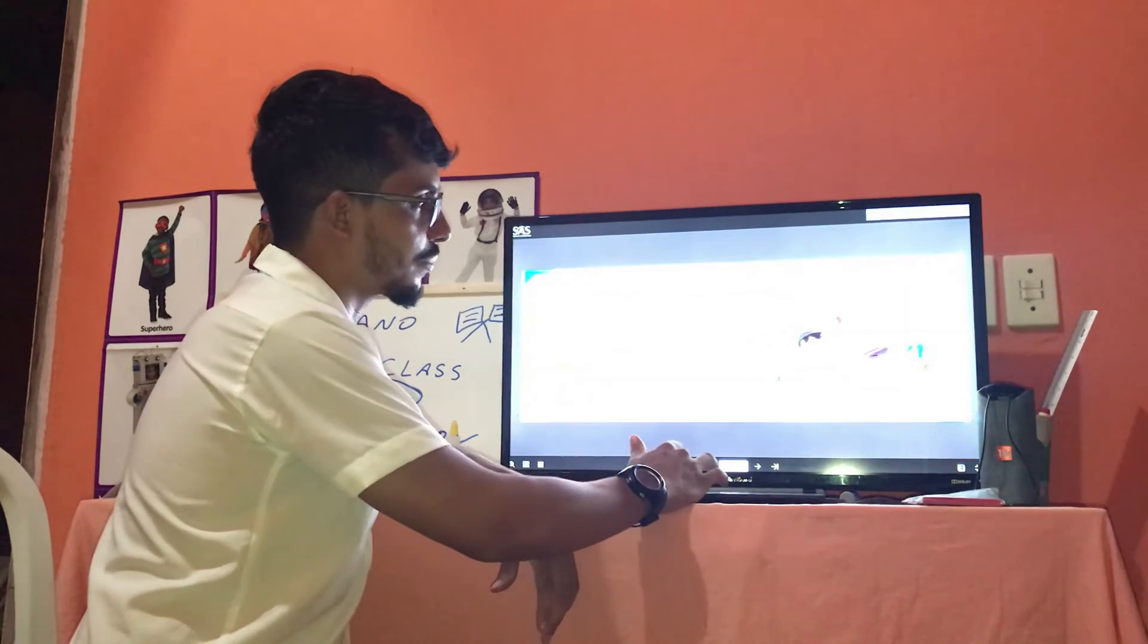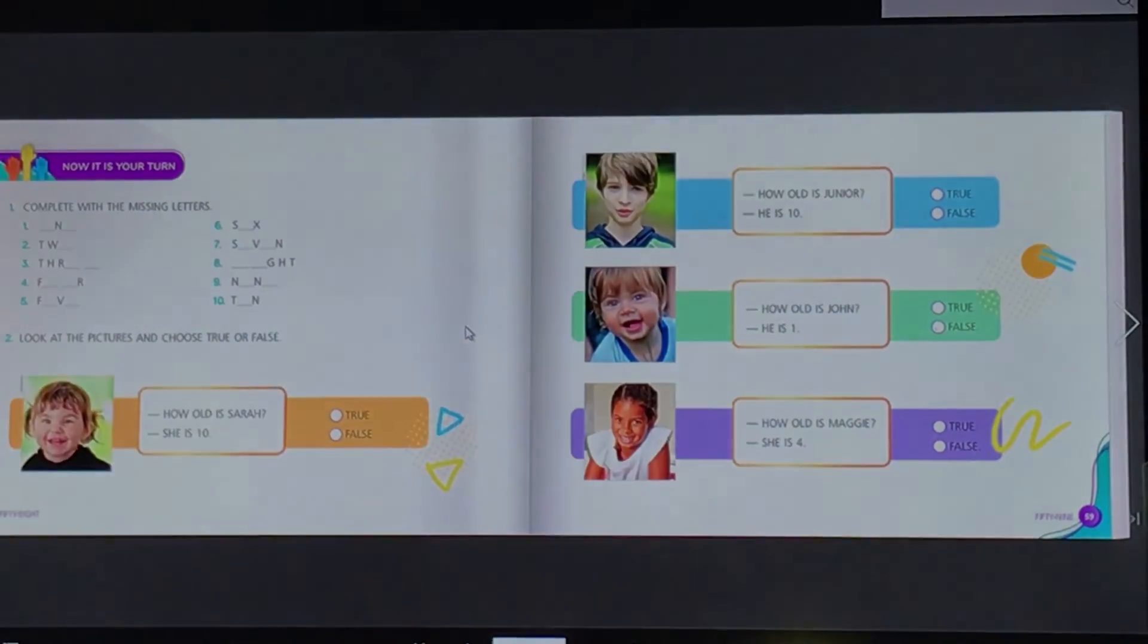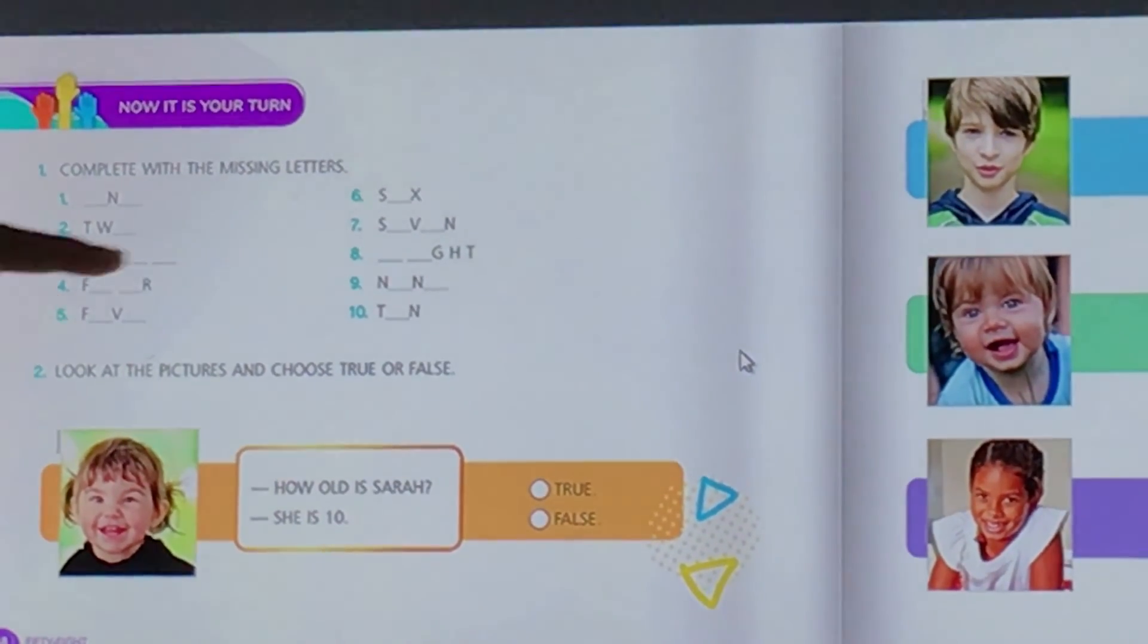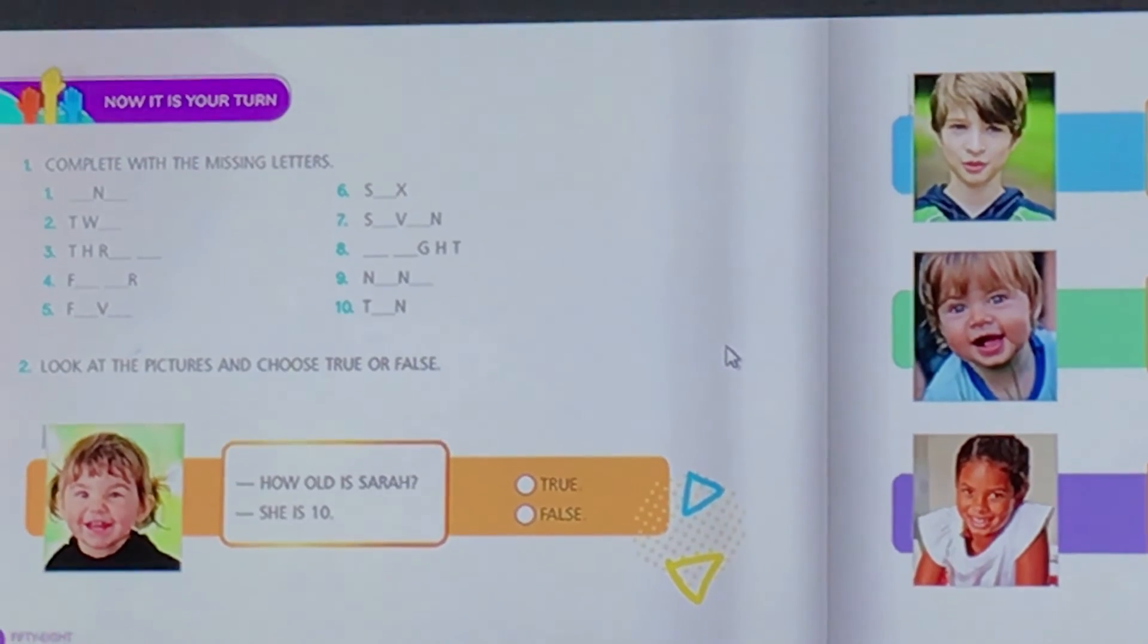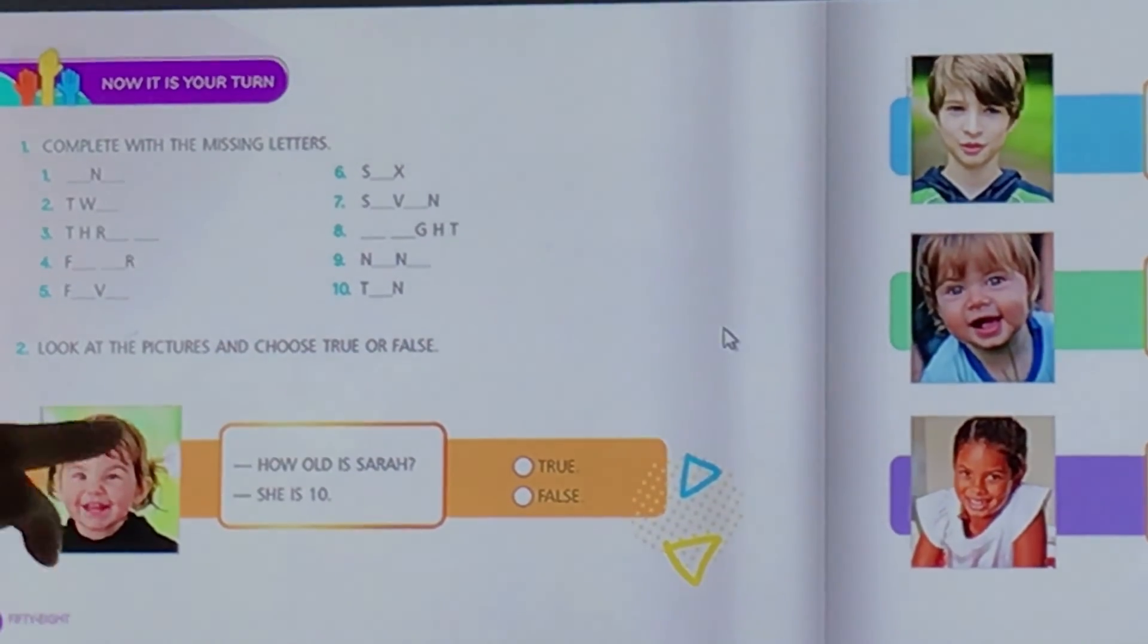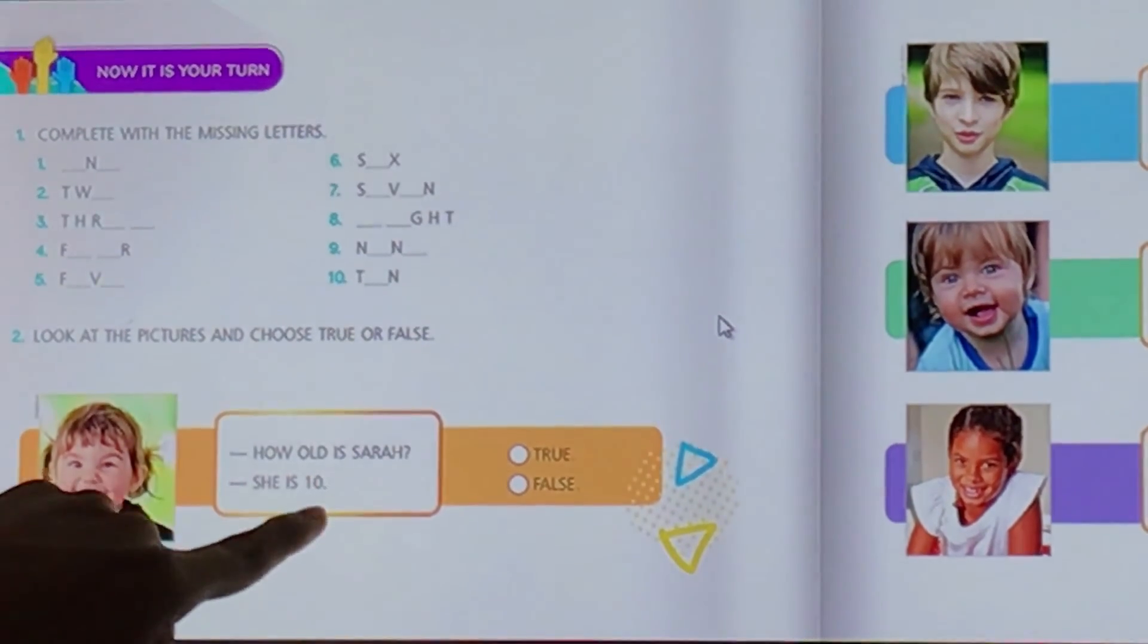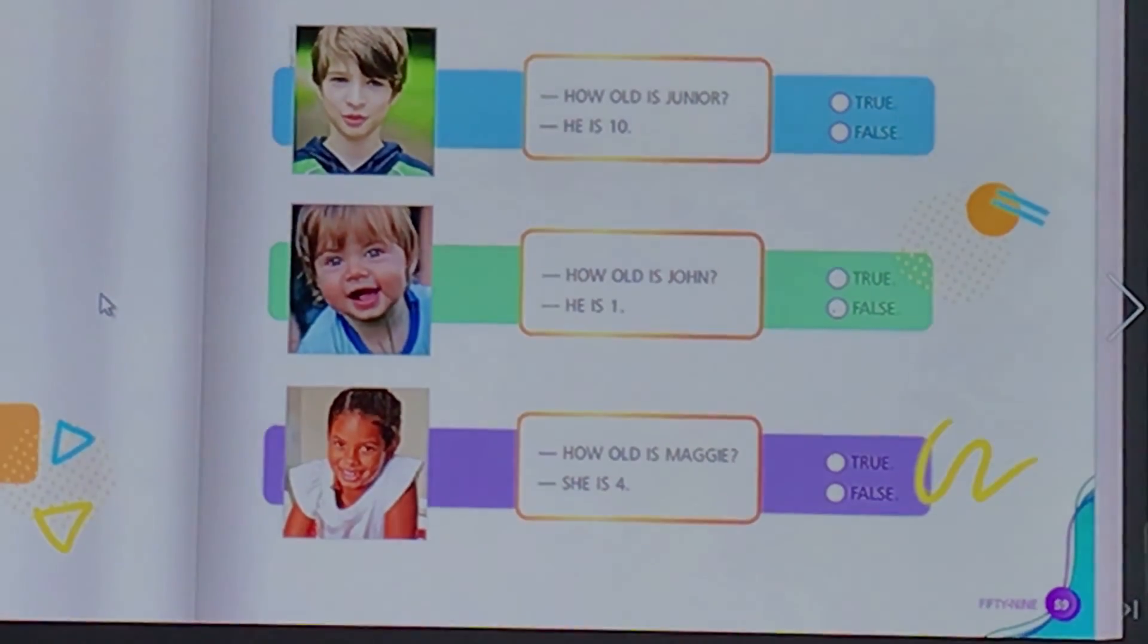E para finalizar a nossa aula, nós temos o dever de casa. O dever de casa é on page 58 and 59. Nesse dever de casa, diz assim, now it's your turn. Complete with the missing letters. Aqui estão escritos os números em inglês, os nomes dos números em inglês, mas estão faltando letras, então vocês vão completar. Se for necessário pode voltar lá para a pirâmide. Number two, look at the pictures and choose true or false. Olhe para a imagem aqui e responda se é verdadeiro, true ou false, se for falso. How old is Sarah? Quantos anos tem a Sarah? Aí aqui tem a resposta, aí você vai dizer true or false. Depois com o Junior, com o John e com a Maggie.